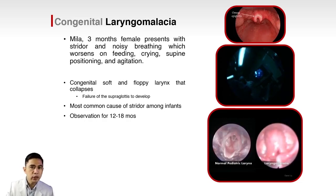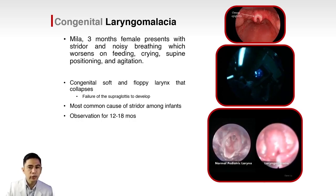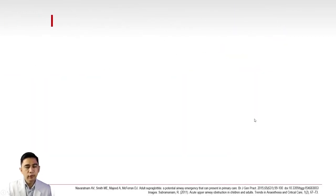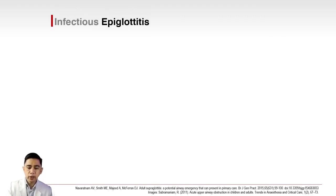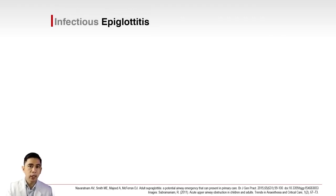Laryngomalacia is the most common cause of stridor among infants. The usual management is observation, waiting for the supraglottis to mature over 12 to 18 months. Surgery is only needed if the patient is very symptomatic and needs airway re-establishment.